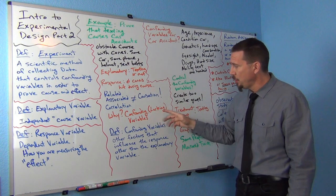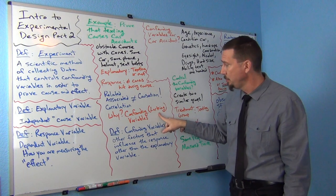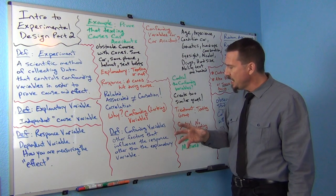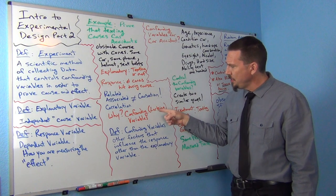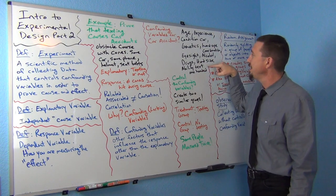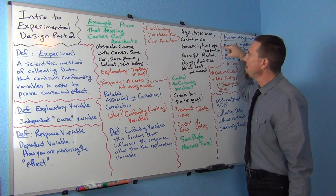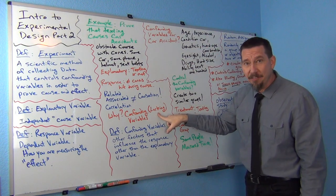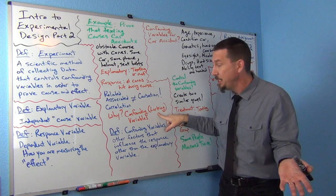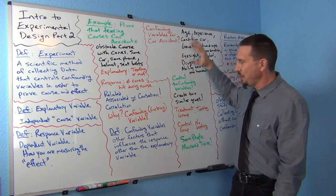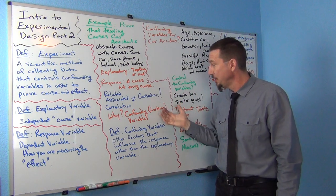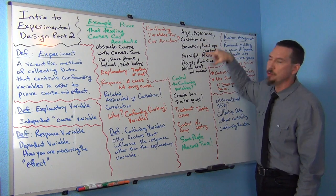By the way, some people call confounding variables also 'lurking variables.' A statistician I spoke with distinguishes them this way: confounding variables are the ones you already knew and listed before the start of the experiment — the ones you've been controlling for. A lurking variable is something you forgot, something you didn't account for that messed up your whole experiment. That's why it's so important to think this list through before you start.